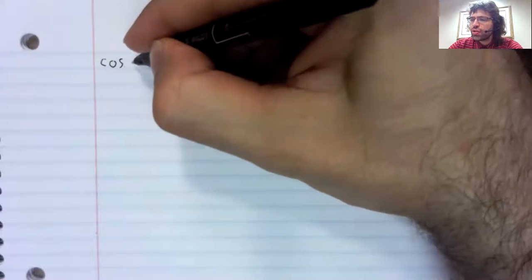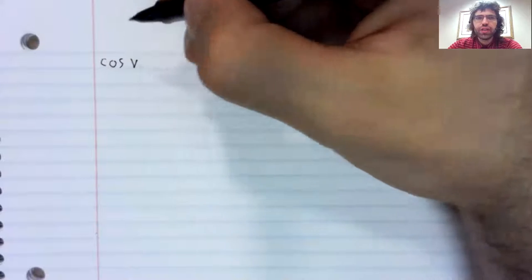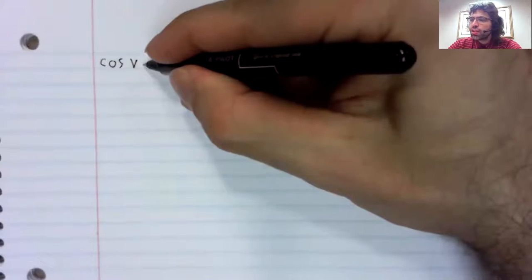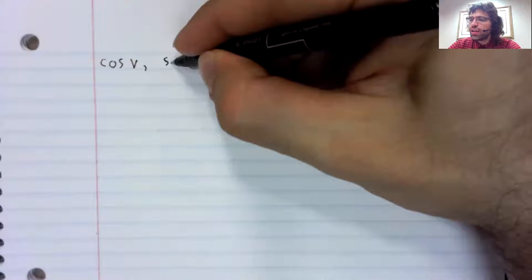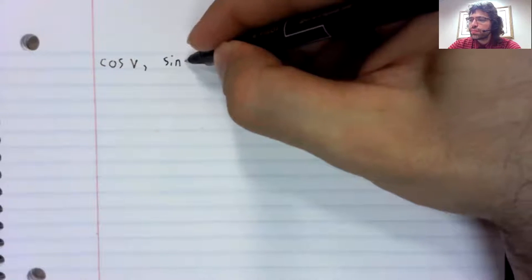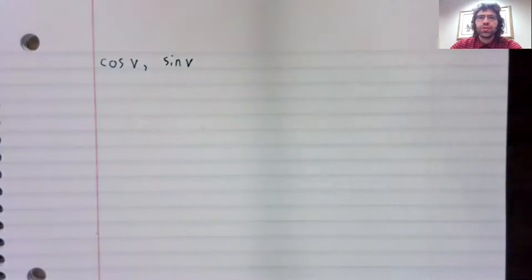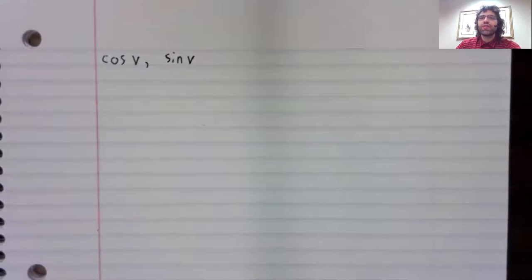Let's review two of the six trigonometric functions. This is going to be a very brief review. I'm basically just going to remind you of the unit circle definition, but let's look at the cosine of v and the sine of v.